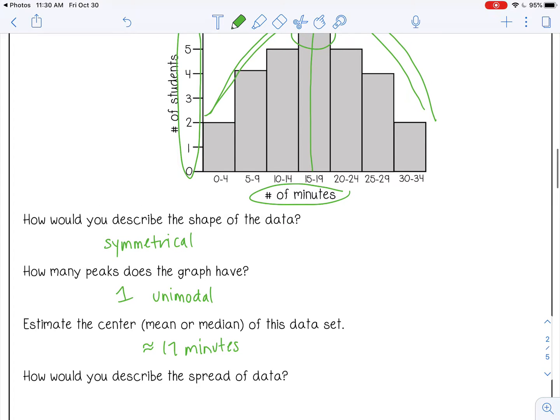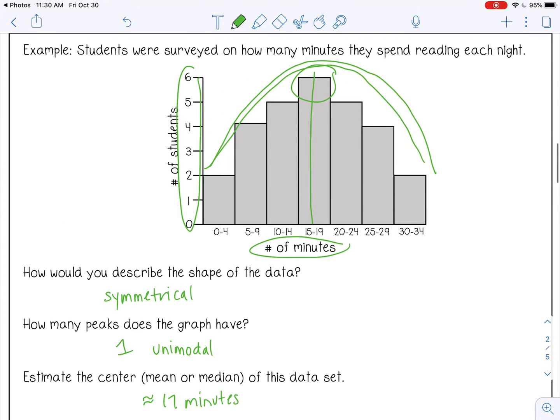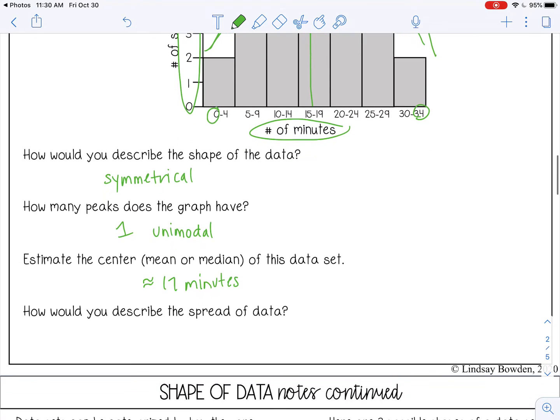And how would you describe the spread of this data? Well, it goes all the way from zero to 34 minutes. So some students are not reading at all. Some students are spending a half hour reading. So about from zero to 34 minutes. So I would say that's relatively spread out. They're not all reading exactly 17 minutes.